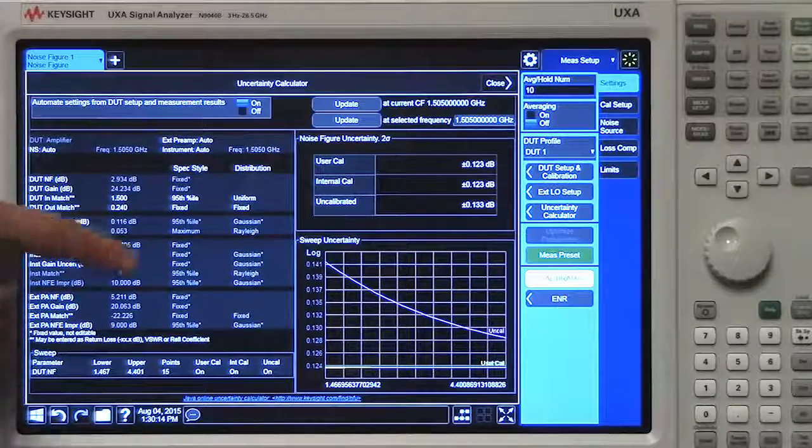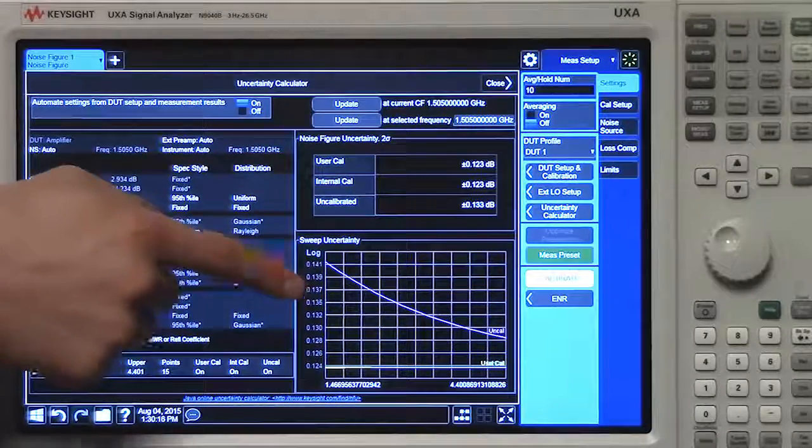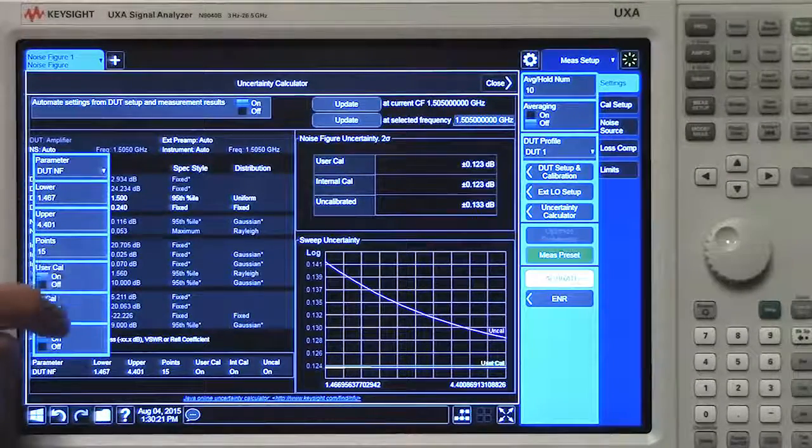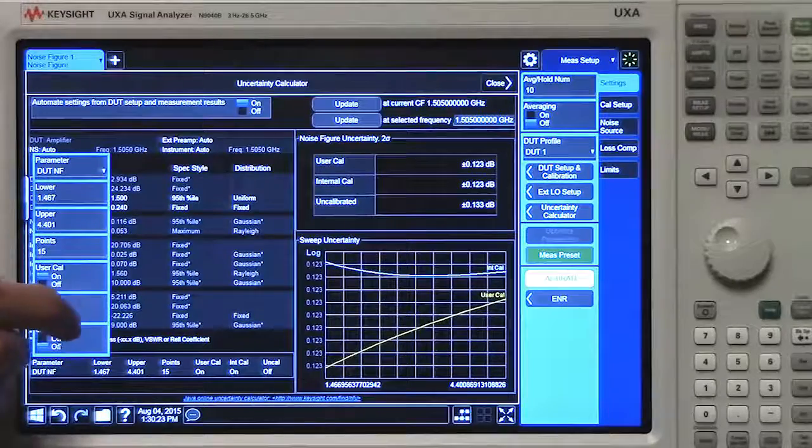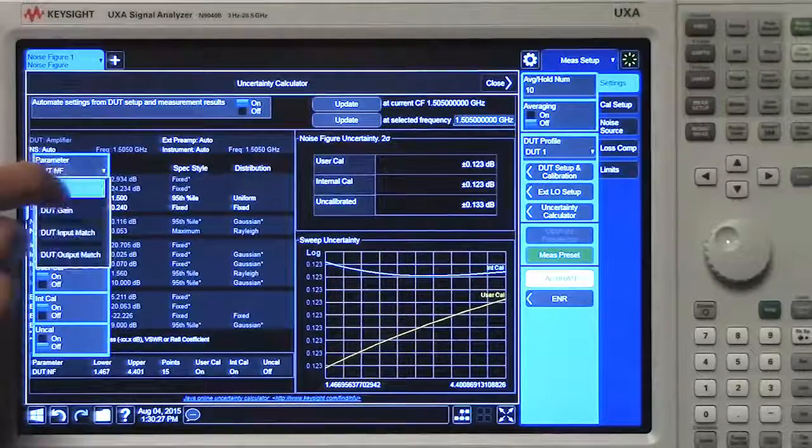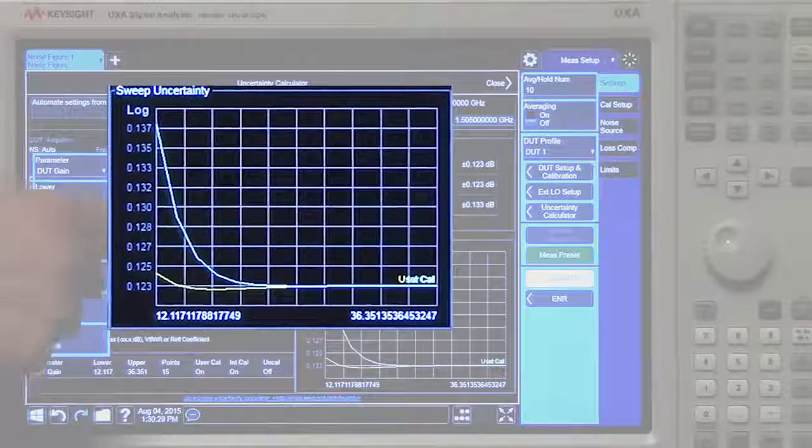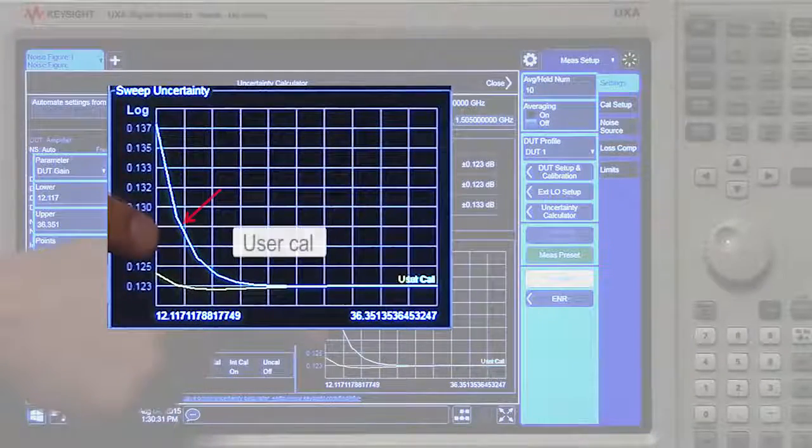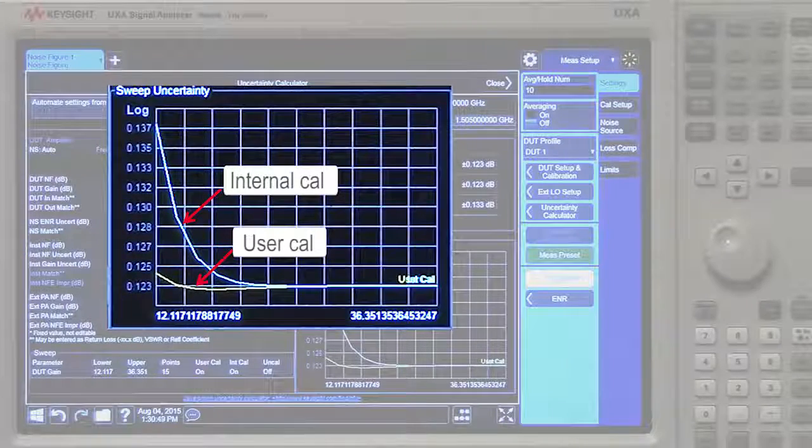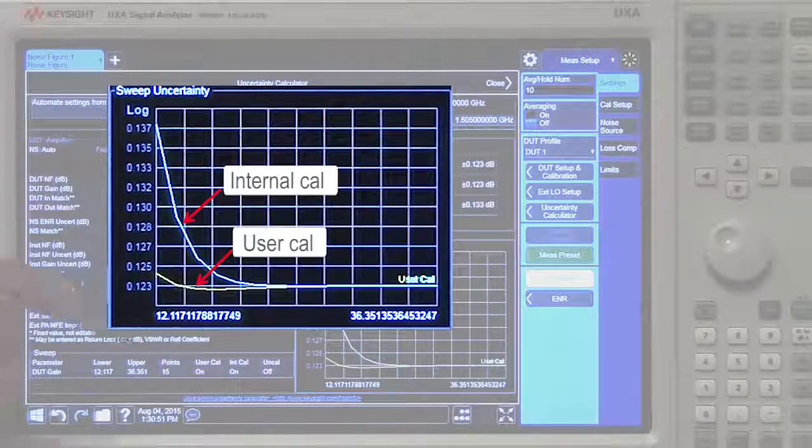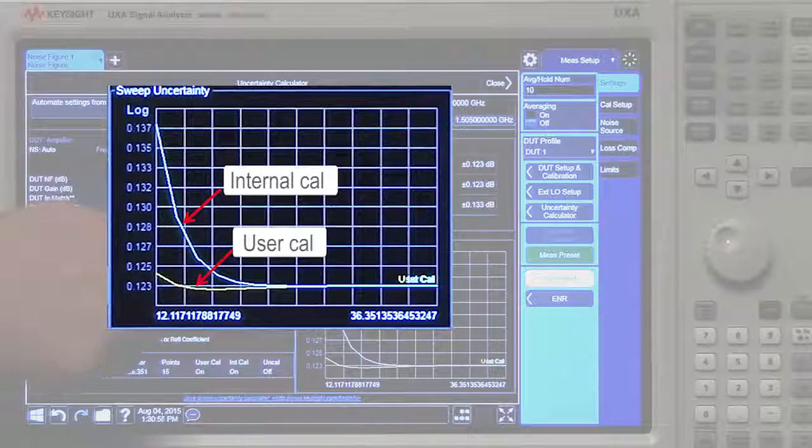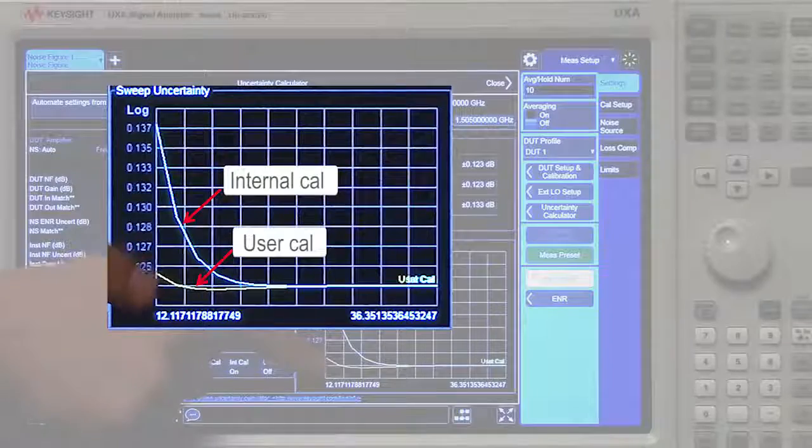You can also choose to sweep any number of parameters. I'm going to turn off the uncal trace, and I'm going to sweep the gain. And you can see the difference between the user cal and the internal cal. The internal cal suffers a little bit for lower gains, so in the situation of a DUT that has a low gain, you'd probably prefer to do a full user calibration.